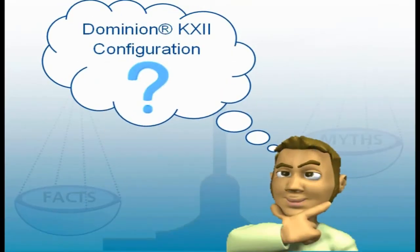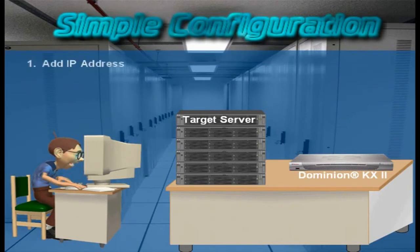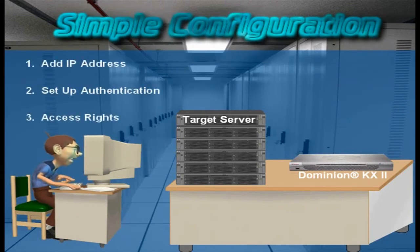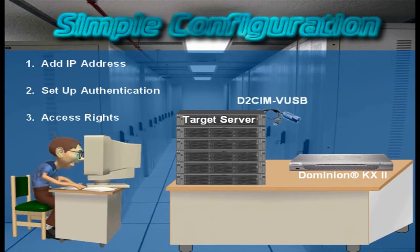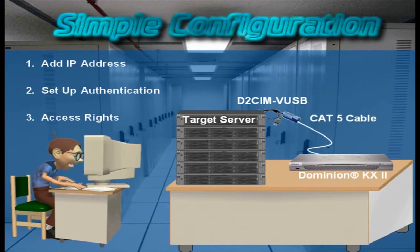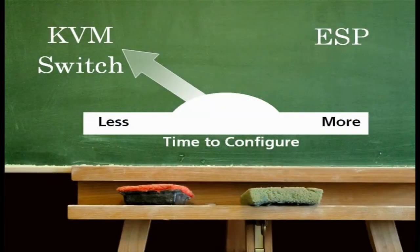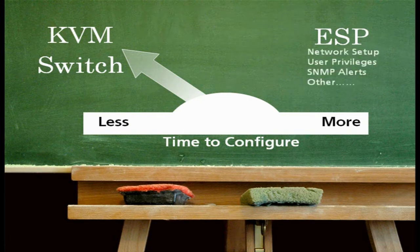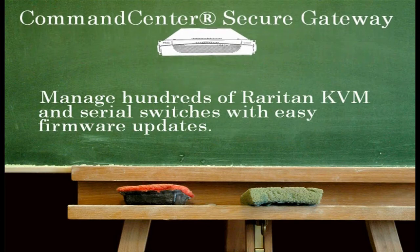Configuring a Dominion KX2 KVM network is simple. Add an IP address and set up authentication and access rights. Then just connect the computer interface module — also called a SIM or dongle — to the server. Connect the CAT5 cable from the dongle to the KVM switch and you're set. A single KVM switch takes much less time to configure than 48 embedded processors, because each ESP requires network setup, user privileges, SNMP alerts, and other parameters to be configured. The Command Center Secure Gateway can also manage hundreds of Raritan KVM and serial switches.